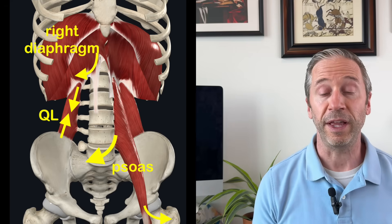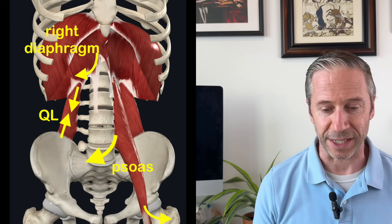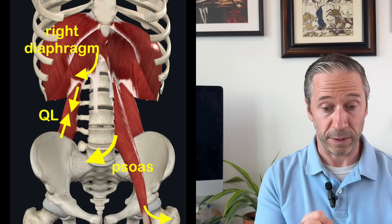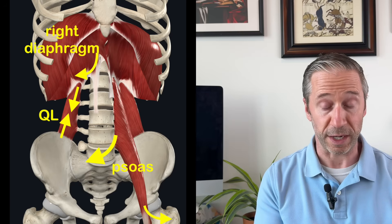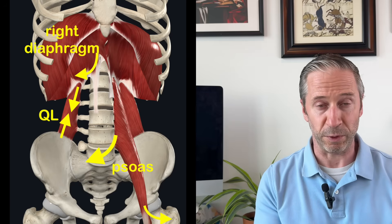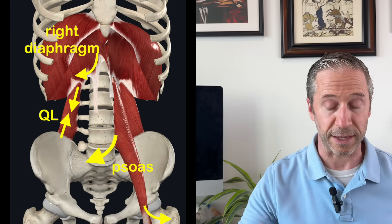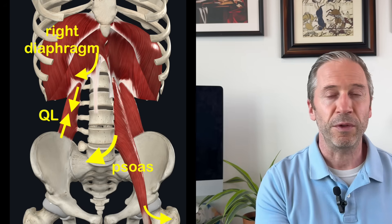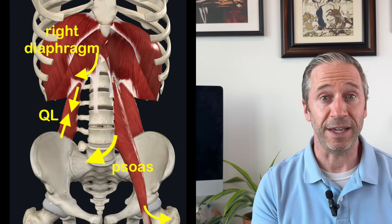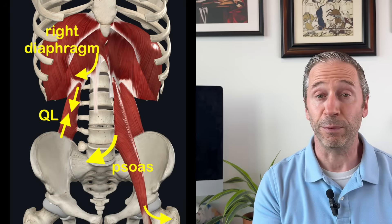Here's a typical situation: a bigger right diaphragm pulling us over to the right, a right QL pulling the right ilium up and the right rib cage down, compressing things on the right side, a left psoas assisting to rotate the lumbar spine and pelvis to the right, and then a weakening of the left-side muscles. The right QL is overactive holding you on the right; the left QL is agitated and can't really fulfill its role of fixing the 12th rib in the correct position so you can expand when you breathe.